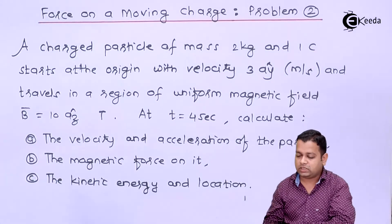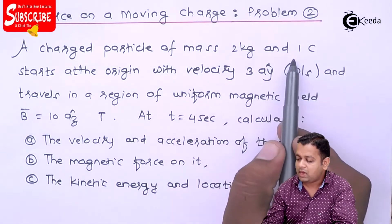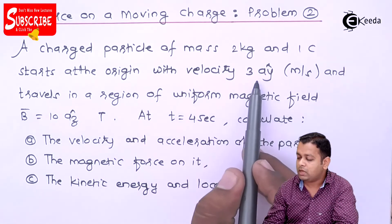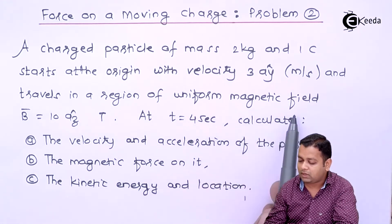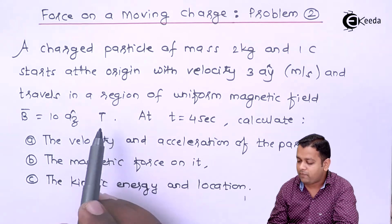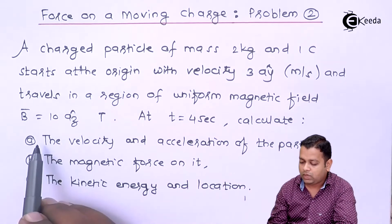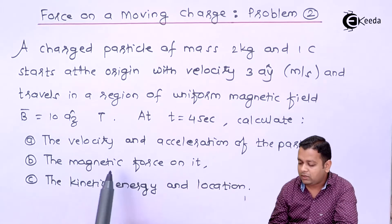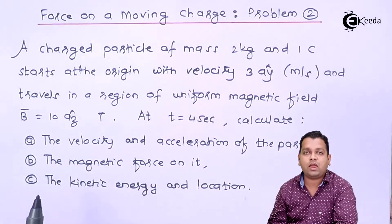The problem statement is: a charged particle of mass 2 kg and 1 coulomb starts at the origin with velocity of 3 Ay cap meter per second and travels in the region of uniform magnetic field B bar equal to 10 Az cap Tesla. At t equal to 4 seconds, calculate: velocity and acceleration of the particle, magnetic force on it, and finally the kinetic energy and location.